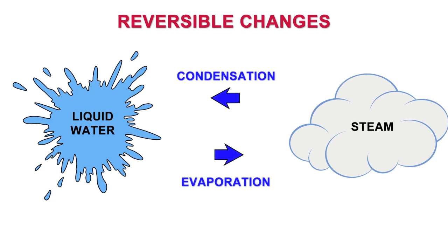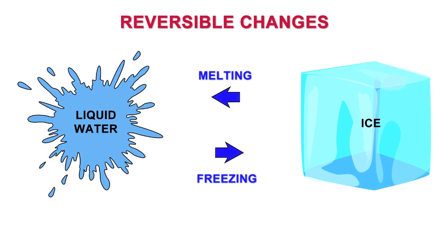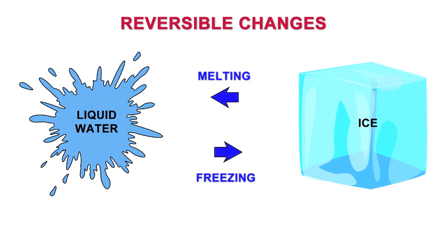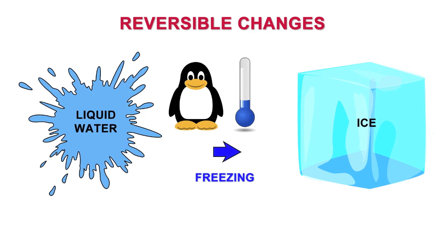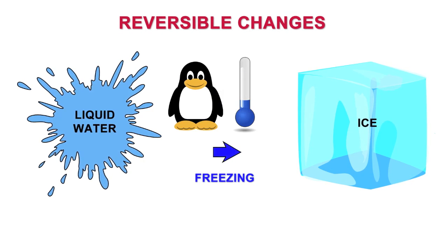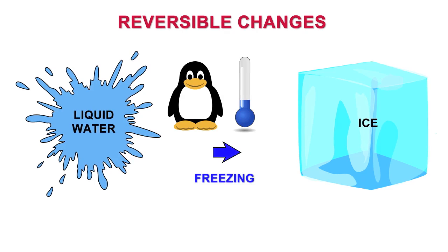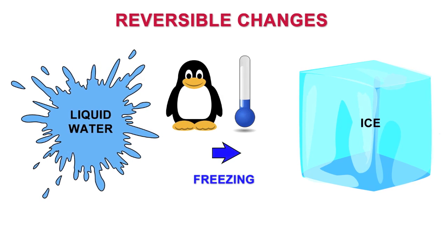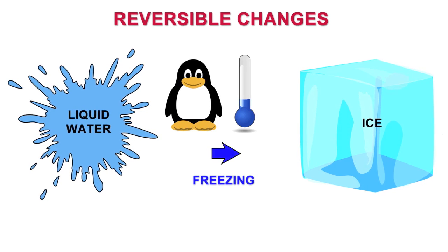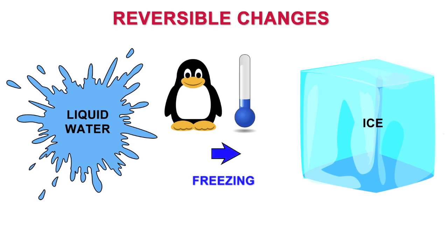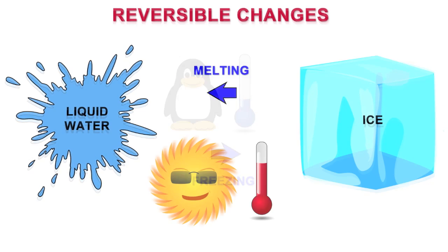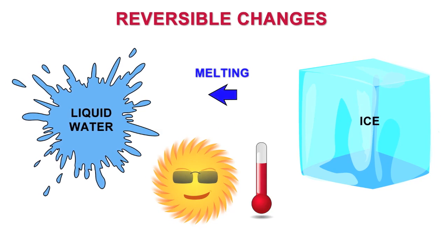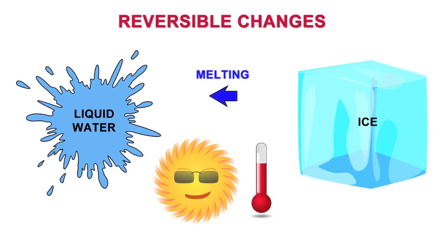Similarly, freezing and melting are also reversible changes. If we cool liquid water down below zero degrees Celsius, it freezes into solid ice. By raising the temperature above zero, the ice melts to form liquid water again.